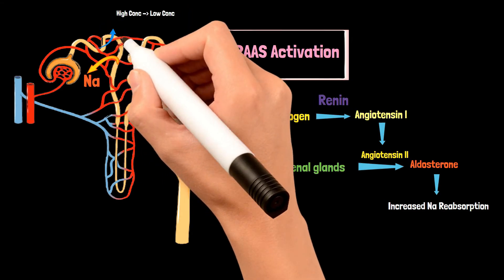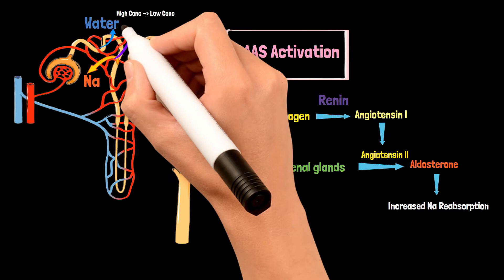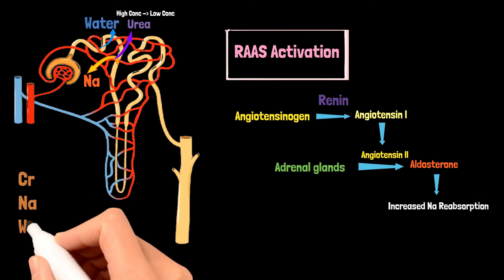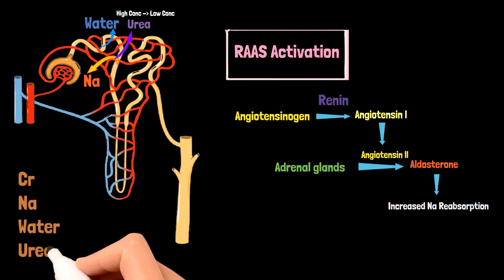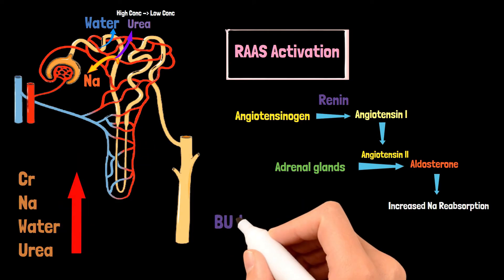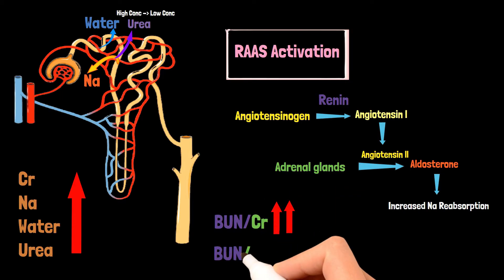When sodium is conserved, water always follows due to the rules of osmolarity. Urea is also integral to the countercurrent exchange system, so it will also be reabsorbed back into the blood. Ultimately, sodium, water, and urea are all reabsorbed back into the blood, increasing their serum levels. This results in the blood urea nitrogen to serum creatinine (BUN:creatinine) ratio increasing drastically — the ratio will be greater than 20.